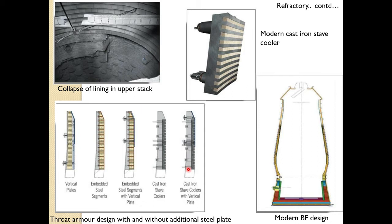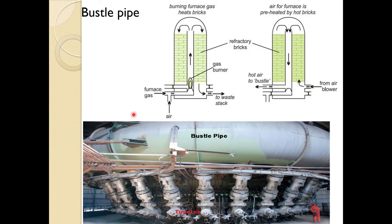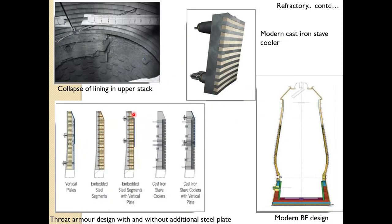This is the design of the modern blast furnace discussed previously. One important point is the throat armor design, which protects the bricks when raw material falls down. The bustle pipe is also very important — gas and fuel are injected through the tuyere, and the bustle pipe surrounds the blast furnace circumferentially.